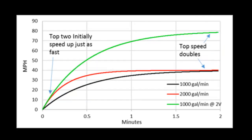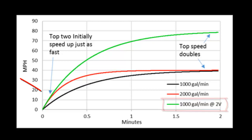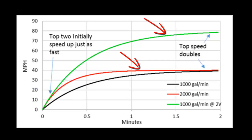Now we'll look at the case where we're throwing the same number of balls but twice as fast, at 80 miles per hour off the back of the boat. The red and green lines initially accelerate at the same speed, but where the red line flatlines at 40 miles per hour, the green line keeps accelerating and eventually flatlines at twice the speed — 80 miles per hour — because that's the speed we're throwing the balls off the back of the boat.